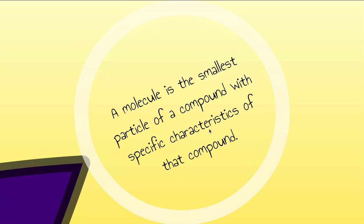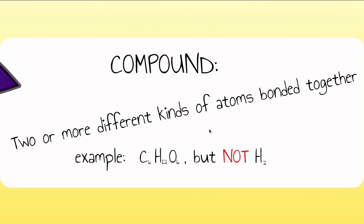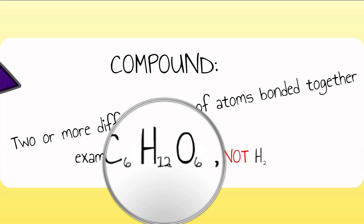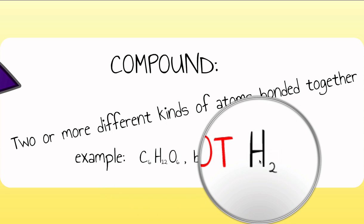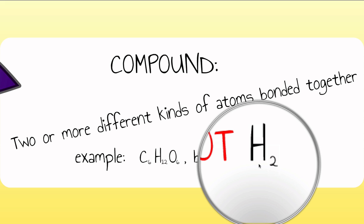Essentially, a molecule is the smallest piece of any stuff, any compound that has all the characteristics of that compound. This brings us to the idea of compounds, which is two or more different kinds of atoms bonded together. With that in mind, glucose would be an example of a compound — three different kinds of atoms: carbon, hydrogen, and oxygen. Hydrogen molecules would not be a compound, because they're not two or more different kinds of atoms. While hydrogen molecules are molecules, they're not compounds.